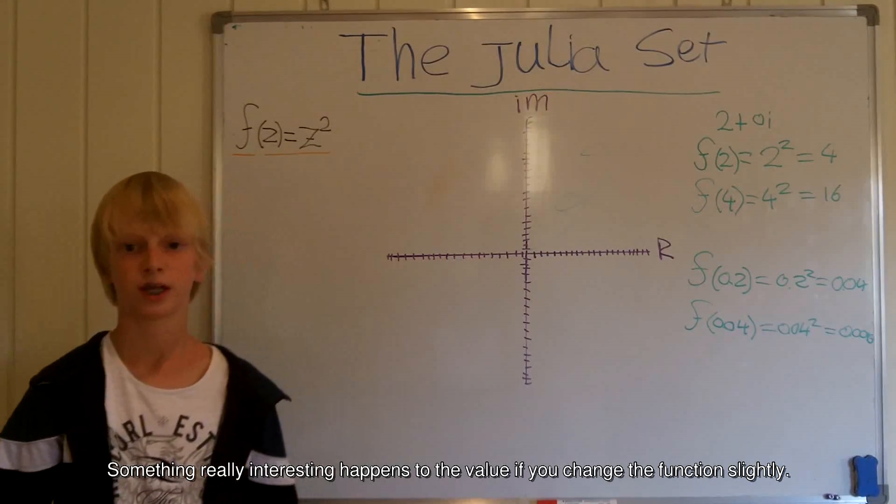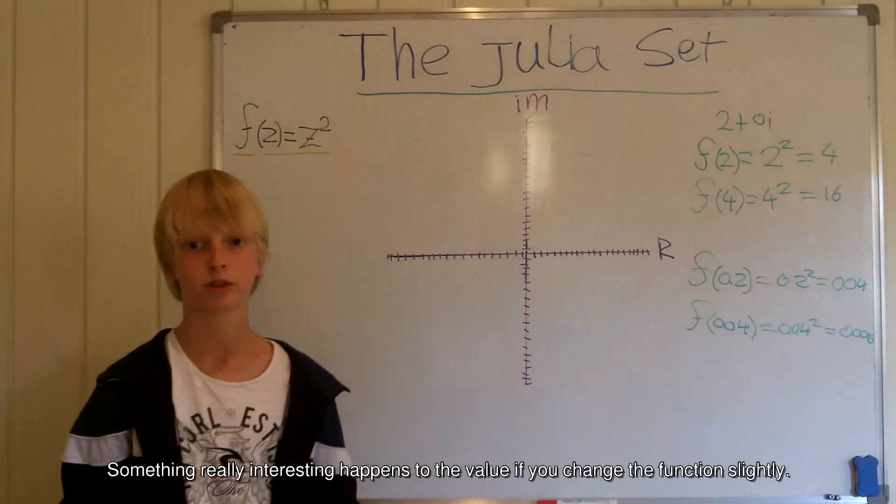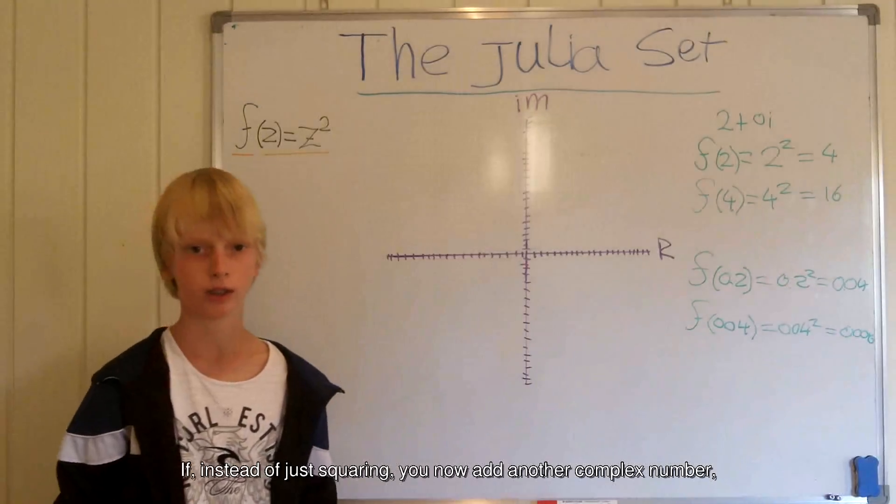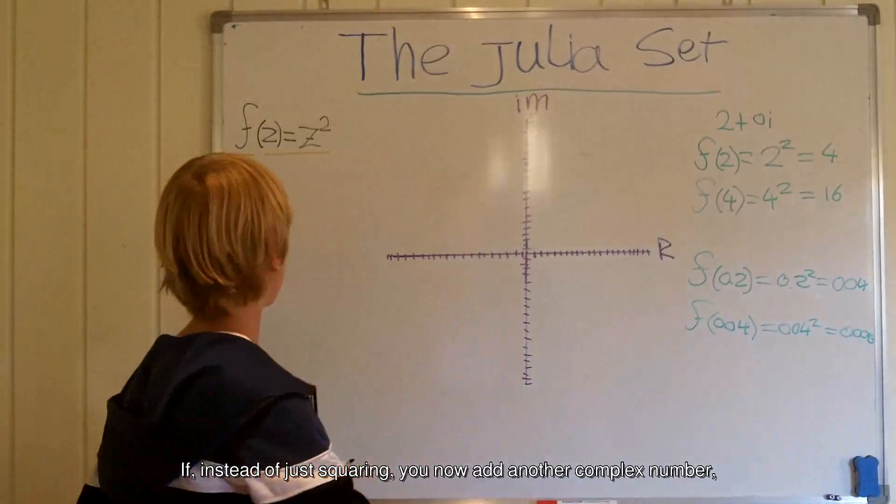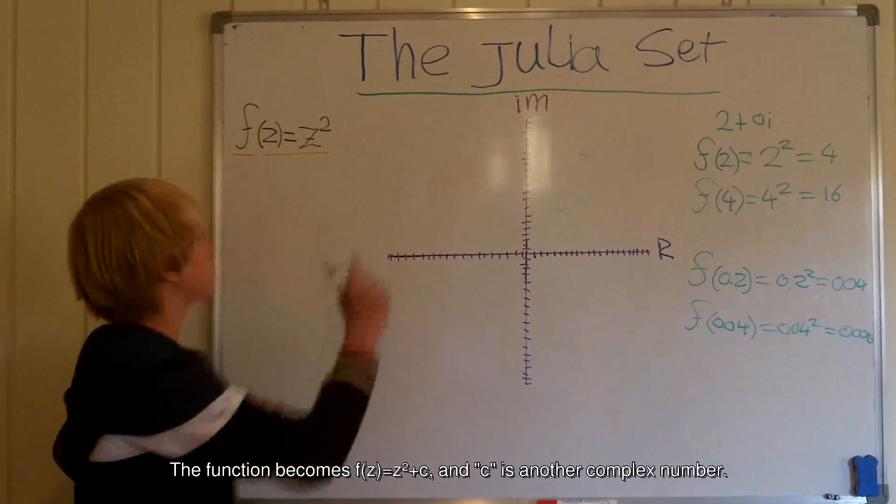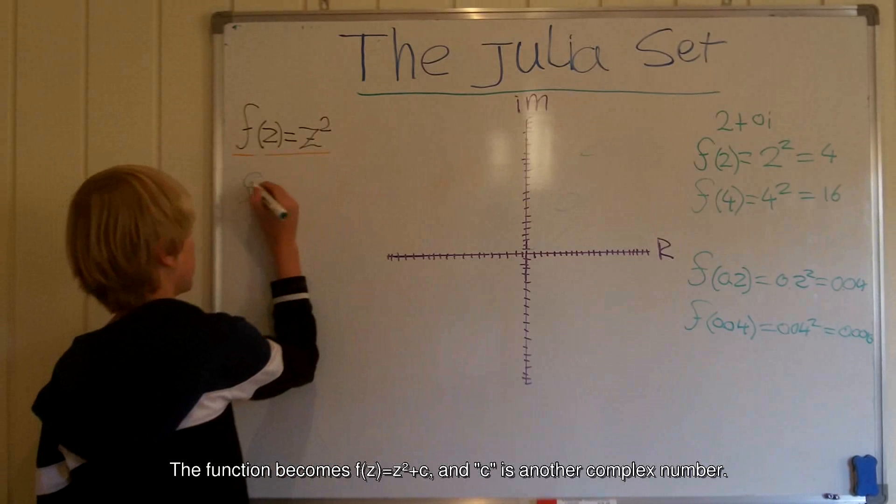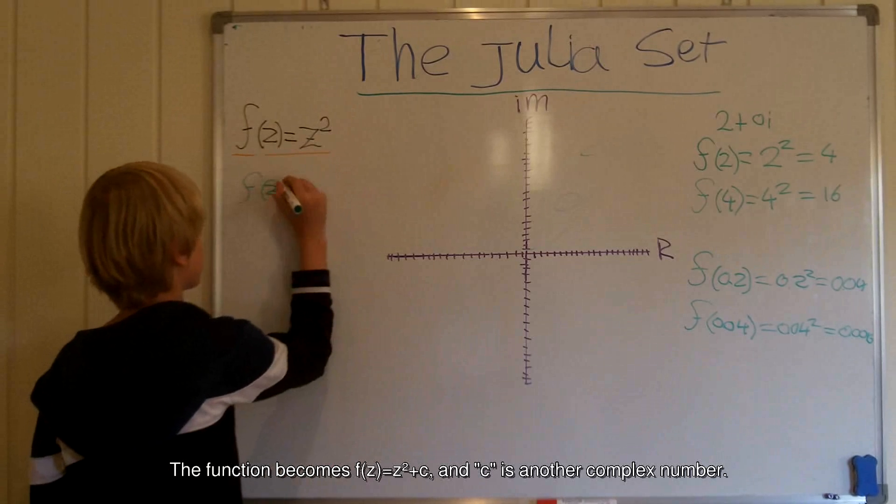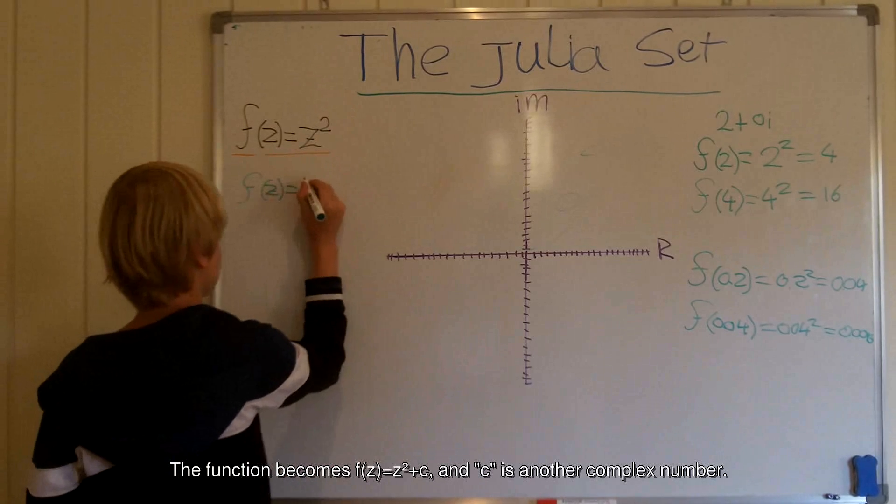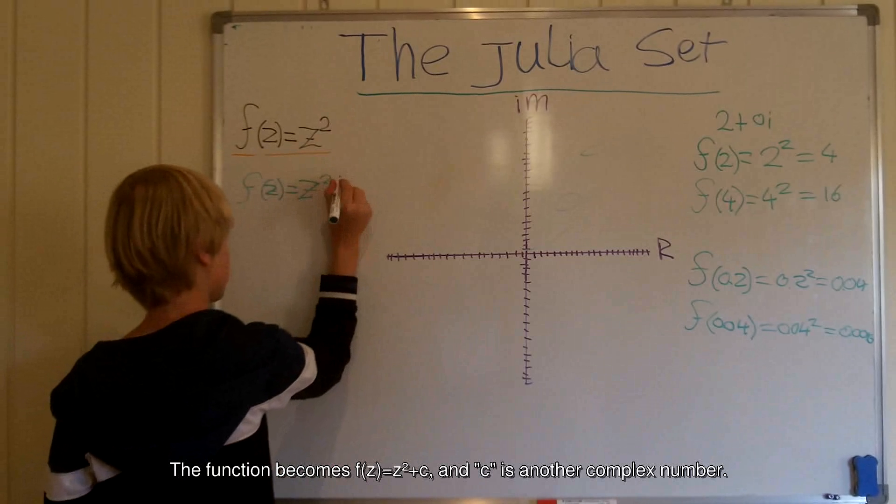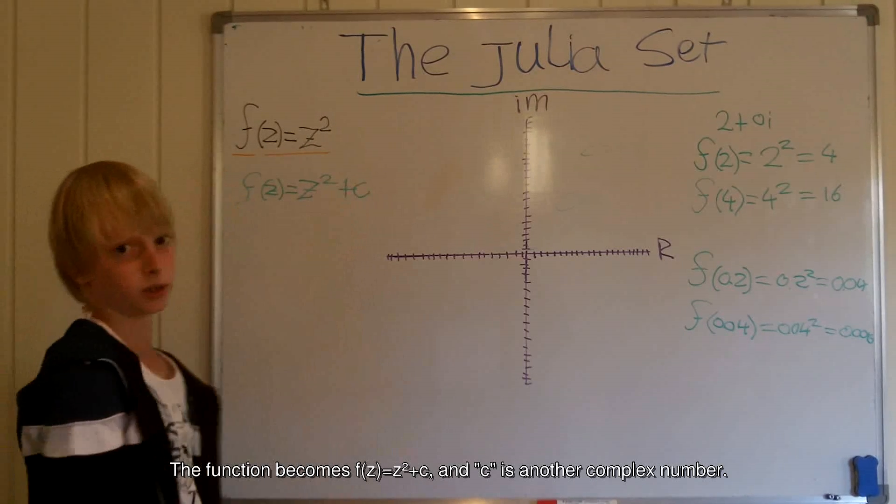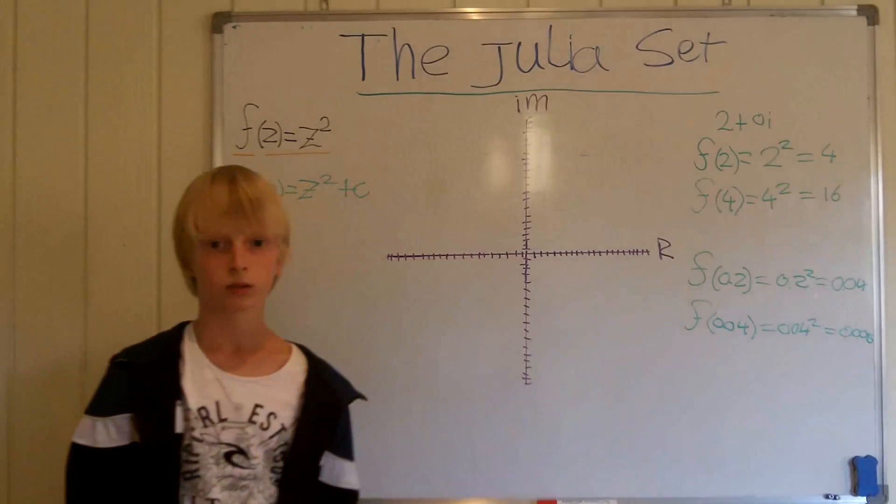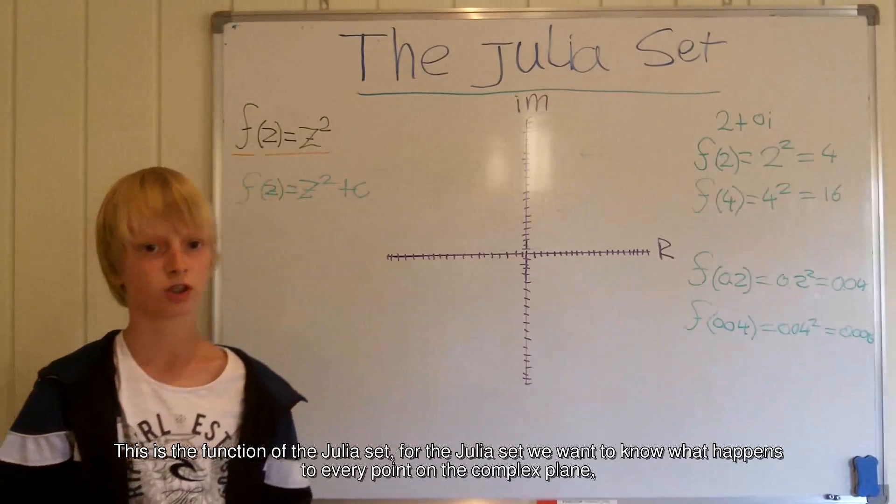Something really interesting happens to the value if you change the function slightly. If, instead of just squaring it, you now add another complex number, the function becomes f of z is equal to z squared plus c, and c is another complex number. This is the function of the Julia set.